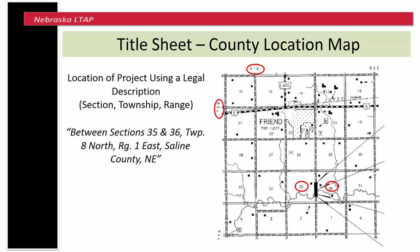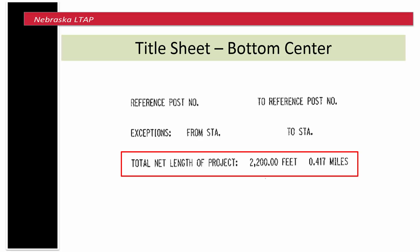Also from the location map, you can give a location description for the project. The location or legal description of the project using section, township and range is given. At the bottom center of the title sheet, the total length of the project is given in feet and in miles.